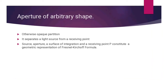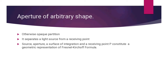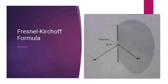First of all, we have to consider the aperture of an arbitrary shape — an otherwise opaque partition which separates a light source from a receiving point. The source, aperture, surface of integration, and receiving point P constitute a geometric representation of Fresnel-Kirchhoff's formula. Here we can see source S and a point P which is at a distant R from the aperture, and the aperture is represented by the letter N.